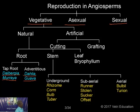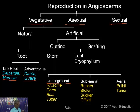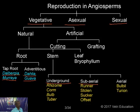When the stem is below the soil level, it is called underground, divided into rhizome, corm, bulb, and tuber. Subarial modification is divided into runner, stolon, sucker, and offset. Aerial modification is divided into bulbils and turion. These are the different classifications of vegetative propagation in plants.